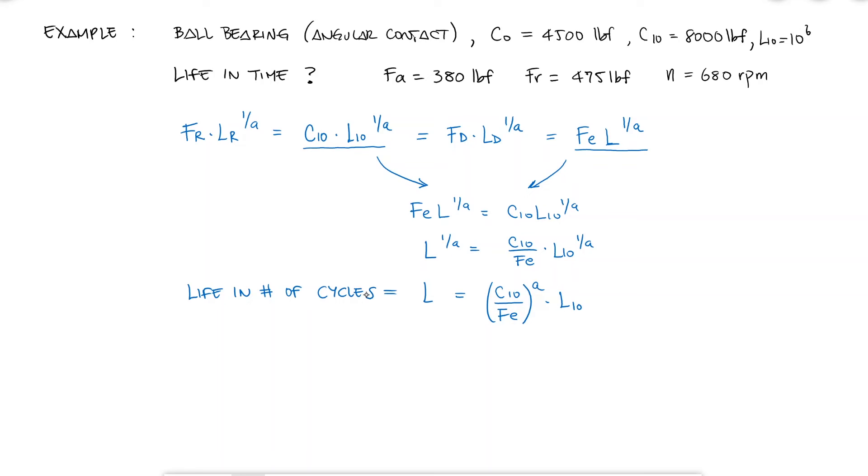Since the question is asking for the life in time, knowing that the bearing is rotating at 680 rpm, and I know that the number of cycles is equal to the speed times the time and correcting for units, I can solve for the life in time in terms of the other variables. L10 and C10 are given by the manufacturer. The rotation speed n I know from the information of the problem, and the A exponent would be equal to 3 since I'm dealing with a ball bearing.